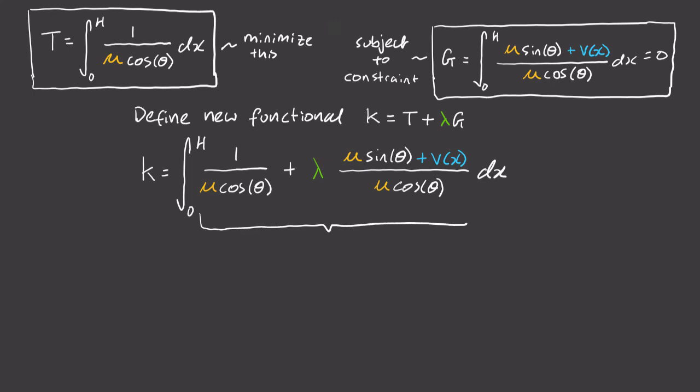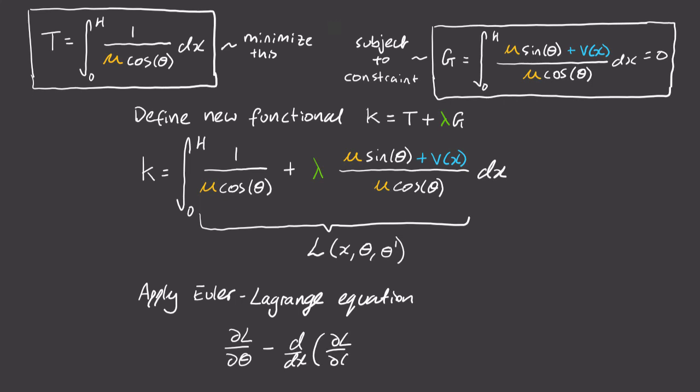I'm going to define everything in this integral equation as L. And in general, L can be a function of x, theta, and d theta dx. Now we can apply the Euler-Lagrange equation to minimize k. And that equation is del-L del-theta minus d/dx of del-L del-theta dash is equal to zero. Luckily for us, theta dash does not appear explicitly in the expression for L, so this means del-L del-theta dash must be equal to zero. As a result, the only equation we need to now solve to find theta is del-L del-theta equals zero.